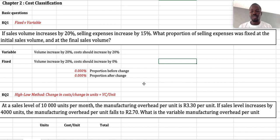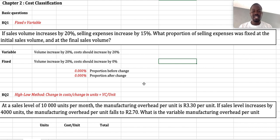Also, when we are looking at fixed costs, the volume increased by 20%, and we expect the cost to increase by zero or to remain the same. In this instance, the volume increased by 20%, whereas the costs increased by 15%. So this is not a fixed cost.